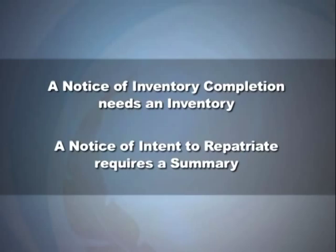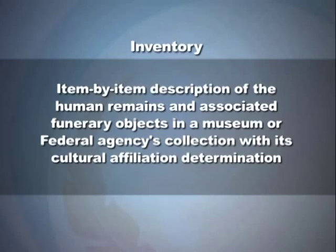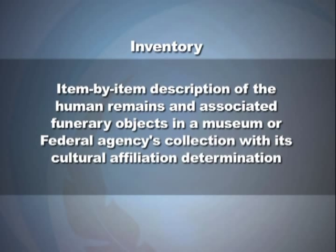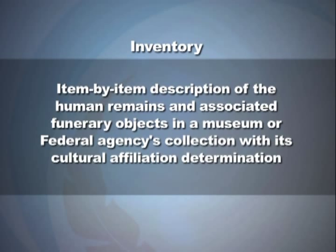Before you can write either Federal Register notice, you must create a certain document first. A Notice of Inventory Completion needs an inventory, and a Notice of Intent to Repatriate requires a summary. An inventory is an item-by-item description of the human remains and associated funerary objects in a museum or federal agency's collection with its cultural affiliation determination. There are two types: culturally affiliated and culturally unidentifiable.